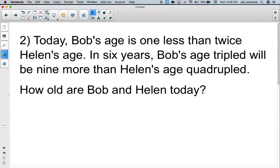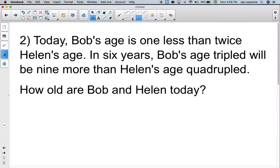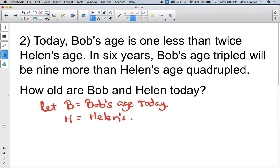So here we go. I'm going to define my variables. I'm going to let B equal Bob's age today. And H is going to equal Helen's age today. How do I know these are the variables? Because that's what I'm asked to find.